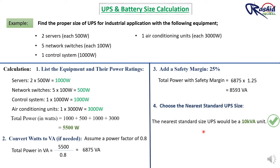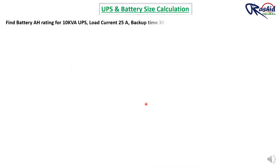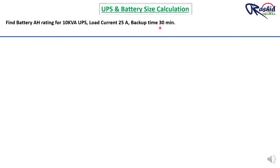Now we will calculate the battery AH rating for the same 10 KVA UPS. The load current is 25 A, the required backup time is 30 minutes, each battery is 12V, and a total of 34 batteries are connected in series, giving a total voltage of 408V.